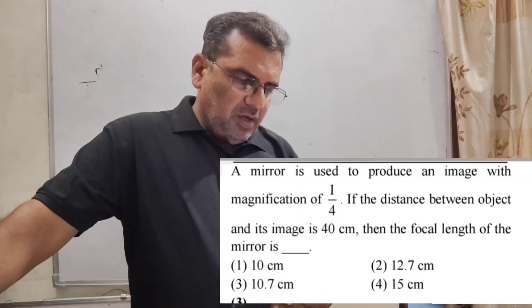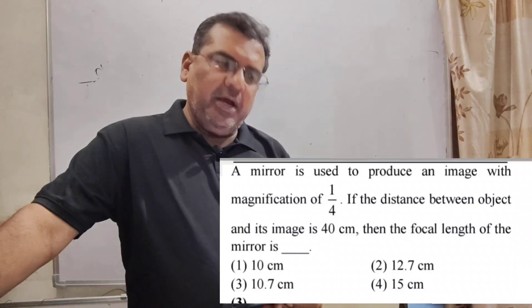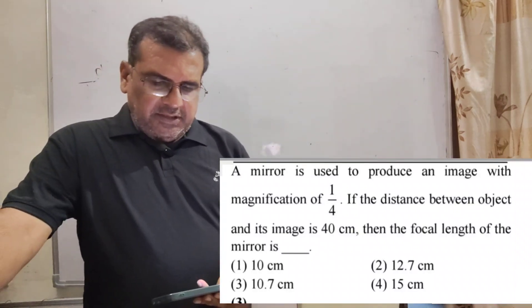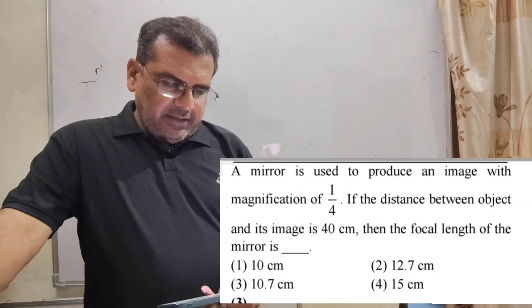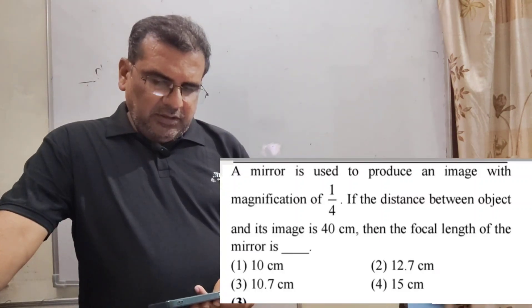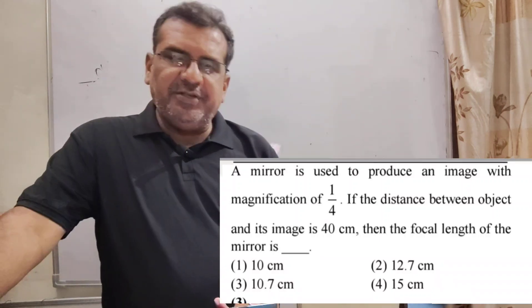Now here is the question. A mirror is used to produce an image with magnification of 1/4. If the distance between object and its image is 40 cm, then the focal length of the mirror is. Here we have given four options.